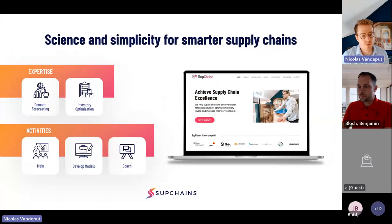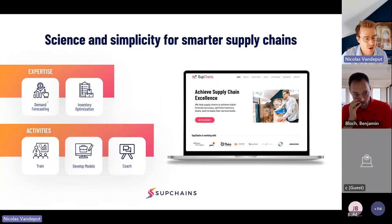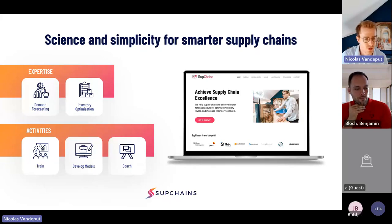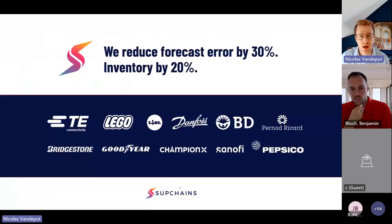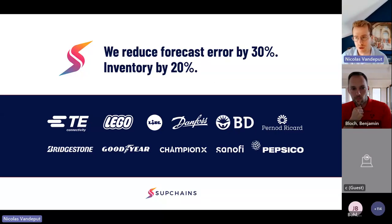My company, Subchains — that's how I make my living. As you understand, we specialize in demand forecasting and inventory optimization. We like to train teams and code our own models, or coach you so you can make your own models. Basically, what we do is reduce your forecast error and reduce your inventory level.